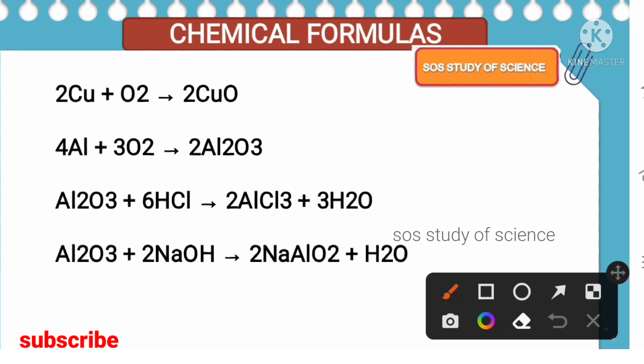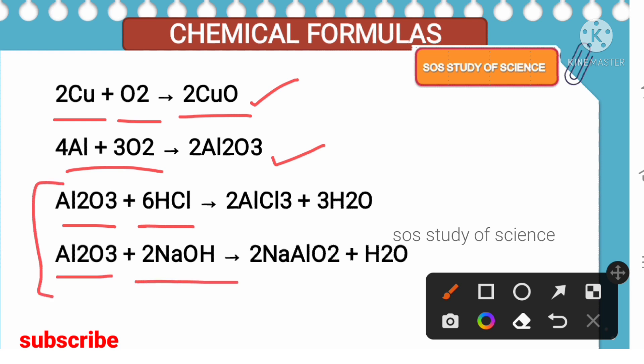Now we learn chemical equations from the Metals and Non-Metals lesson: what happens when metals are burnt in air, when metals react with water, and when metals react with acids. First: when a metal combines with oxygen, metal oxide is formed. Example — copper + oxygen → copper oxide (metal oxide). Similarly, aluminium + oxygen → aluminium oxide. All these equations are balanced.